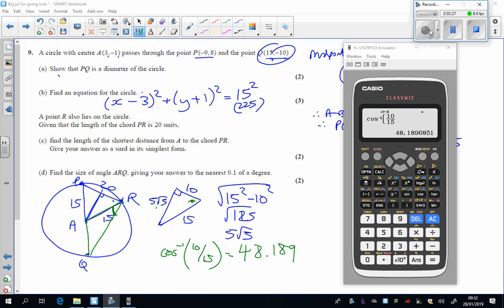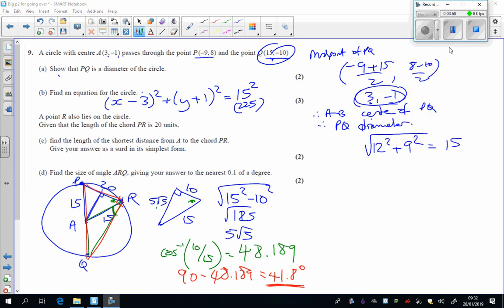Now that's that angle there, and one final piece of GCSE maths to remember is that if this is a diameter, then this angle here is 90 degrees. So the angle we want is 90 minus the 48.189. So the angle we want is 41.8 degrees. And really, we'd expect most of that to be correct if you're going to get a high grade.